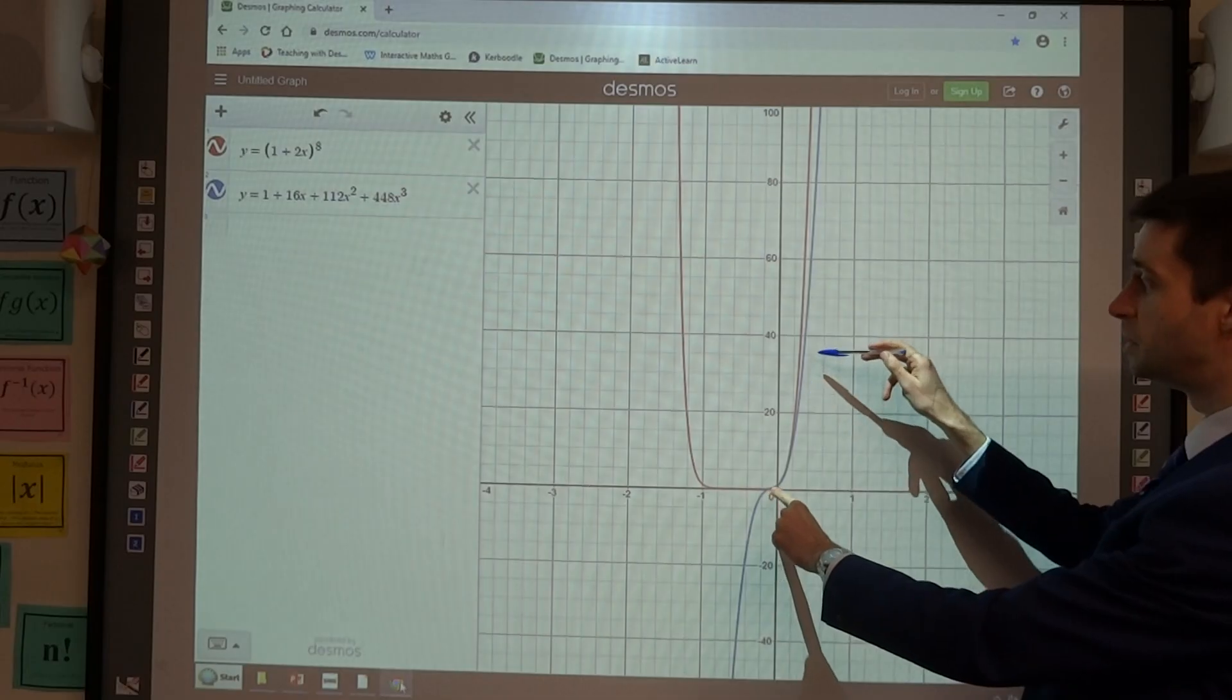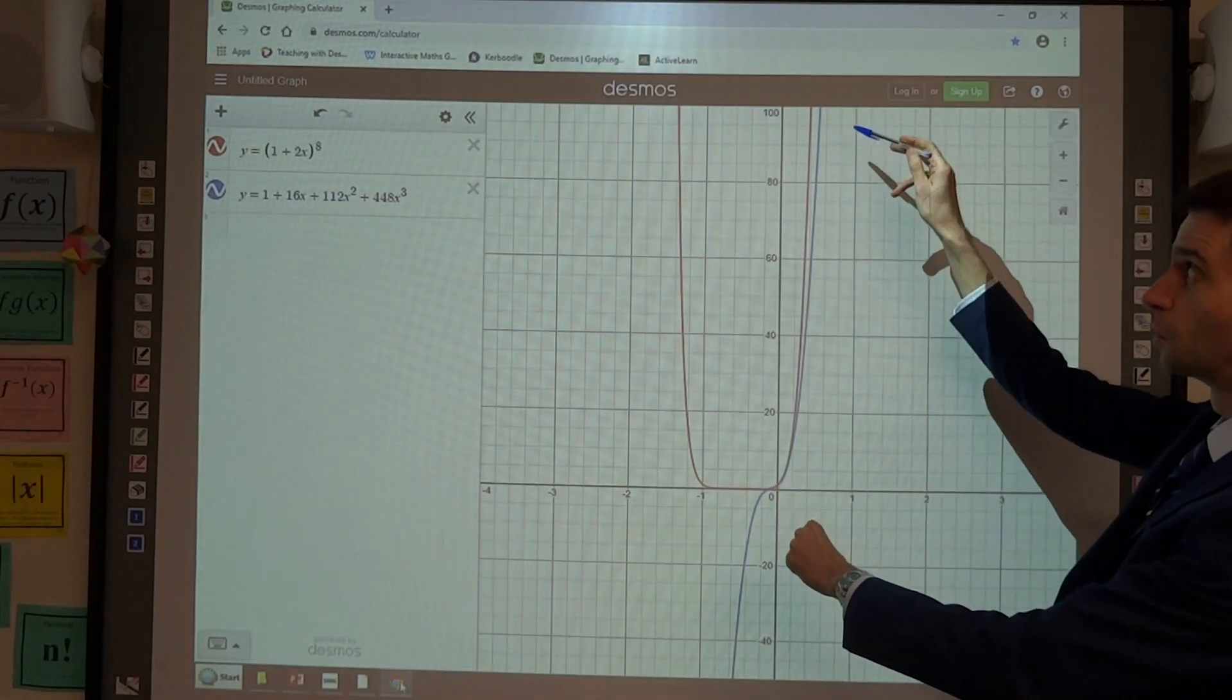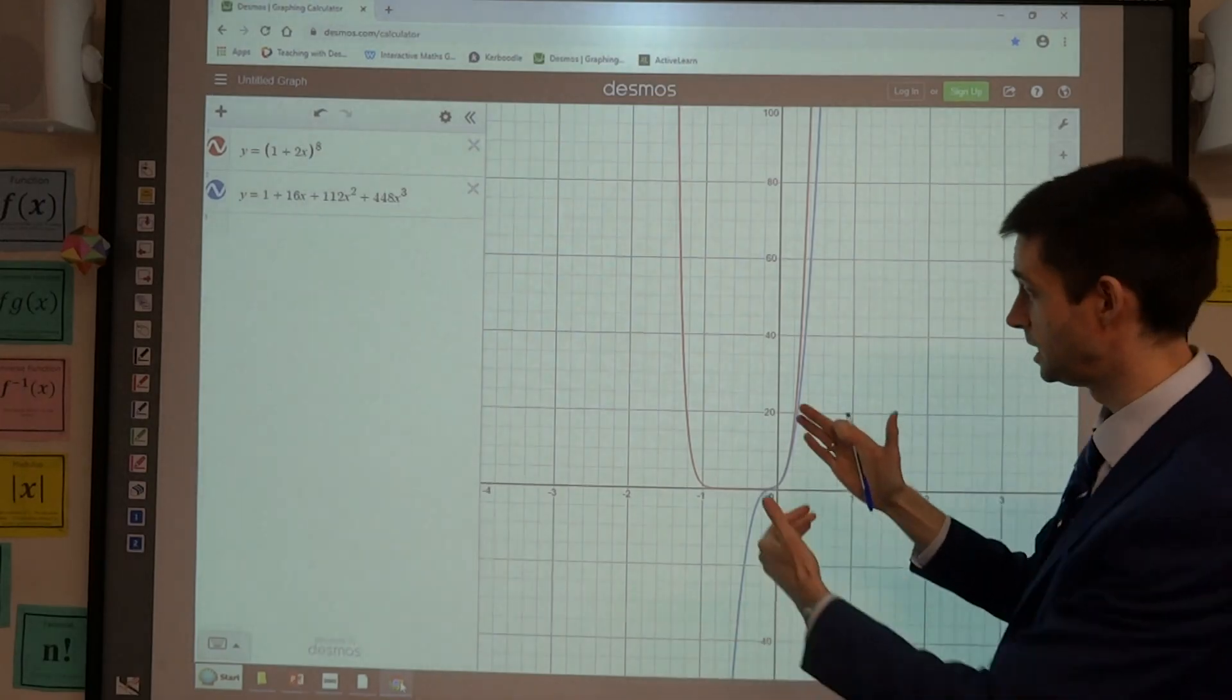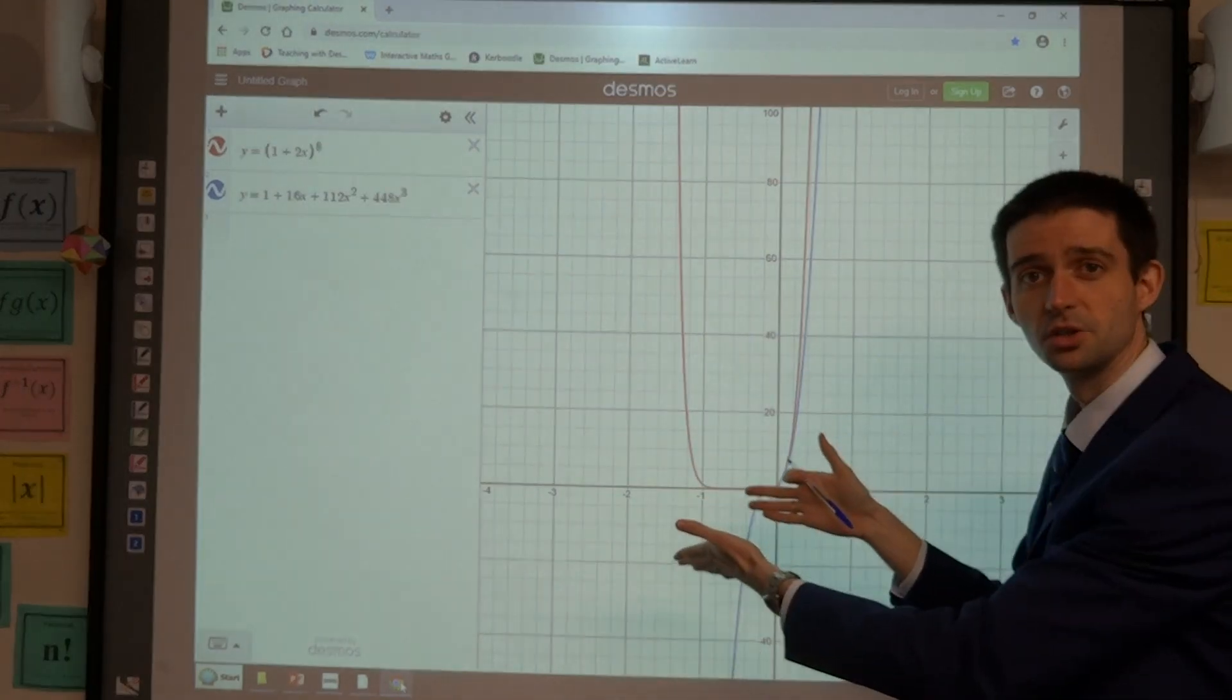And you can see how the curve in blue is quite close to the curve in red for these small values of x, but the bigger x gets, the further and further away that curve gets from being the same as (1+2x)^8.